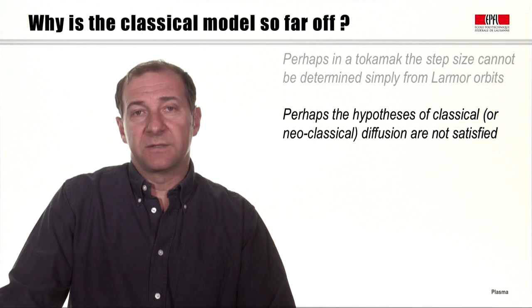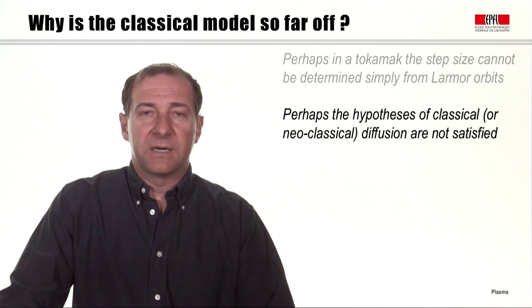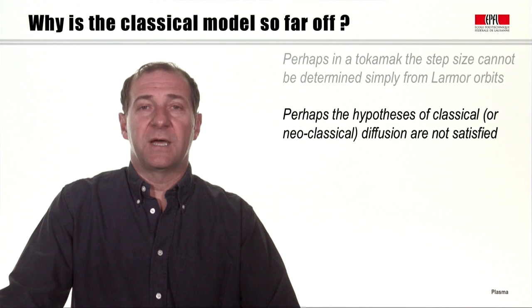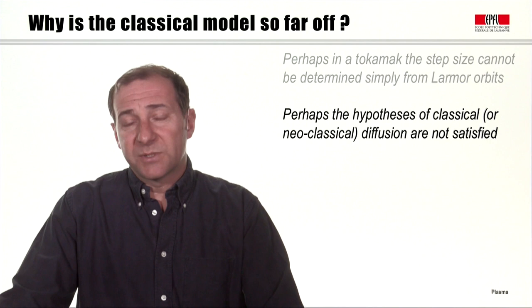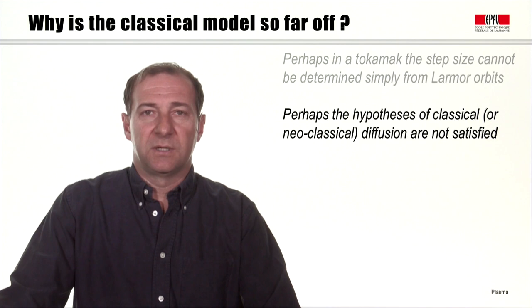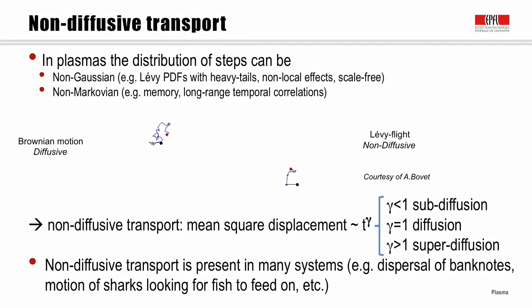Perhaps we can question the hypothesis of classical or even neoclassical diffusion altogether. What we assumed was that classical diffusion is characterized by a Gaussian distribution of step sizes — in fact we took the same step size for all particles of the same species. This may not always be the case. We can have a non-Gaussian distribution — for example, probability distribution functions that have heavy tails, meaning a non-negligible probability of having very, very large steps. This is the typical situation of what are called Lévy flights.